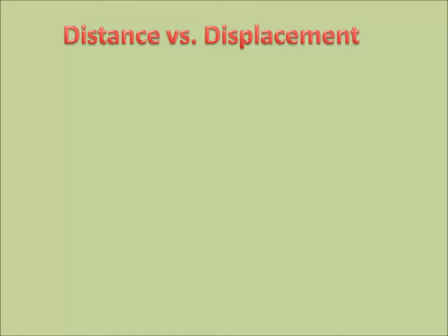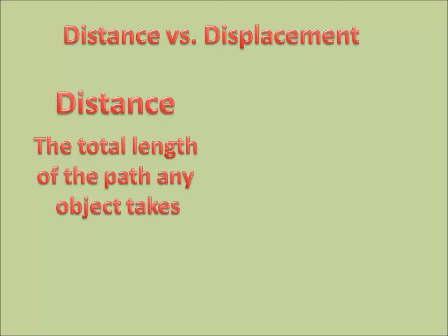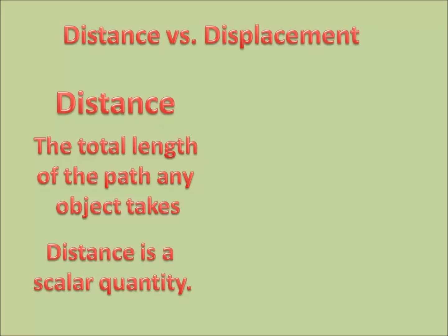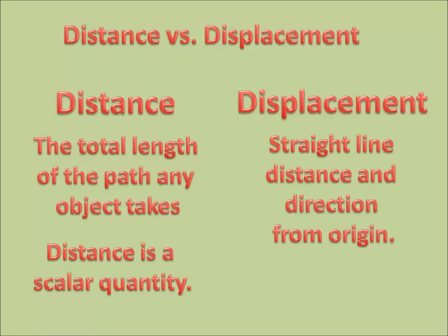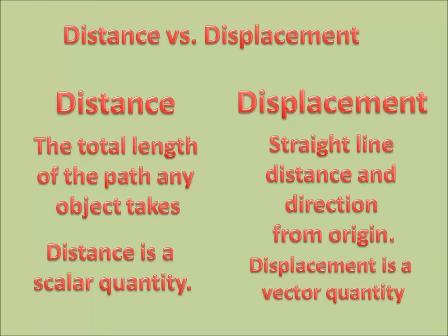So remember — distance versus displacement. Distance is the total length of the path any object takes. Distance is a scalar quantity; it does not have a direction, just a magnitude. Displacement, however, is the straight line distance and direction from the origin. Displacement is a vector quantity — a magnitude or measurement with a direction.